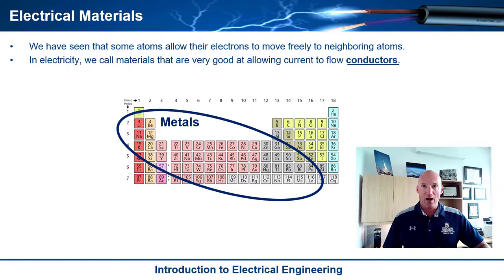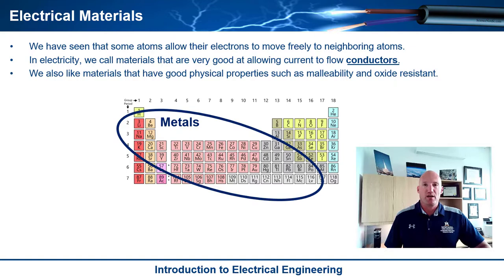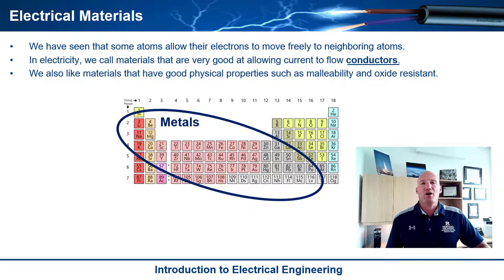Some of the other things we need to consider: there might be a really good conductor within the periodic table, but it has to have other properties that make it usable, such as malleability so it can bend and isn't brittle, so we can make wires out of it. Also oxide resistant is nice, so it doesn't rust continually, even though some conductors we do use do rust. These physical and mechanical properties make them ideal for actually building systems. And of course it has to be abundant.